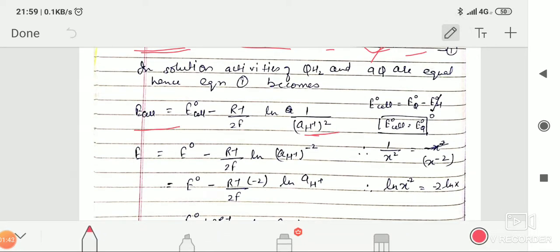As 1 upon this term, using this formula, this term can be written like this. Finally, it becomes E equals E naught minus RT upon 2F ln activity of H+ minus 2. As we know that ln X minus 2 can be written as minus 2 ln X, this minus 2 will be multiplied here. The equation becomes E naught minus RT upon 2F minus 2 ln activity of H+.